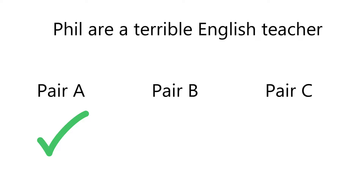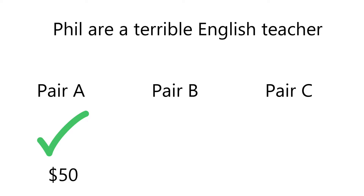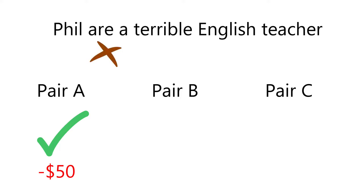What I normally do is have pairs, starting with pair A, who say whether they think the sentence is correct or incorrect and how much of their money they want to bet. I normally give students about a hundred dollars to start with. Try to keep bets to round numbers — fives and tens. If they bet five dollars and win, they get five dollars back; if they lose, they lose five dollars. Keep it simple.